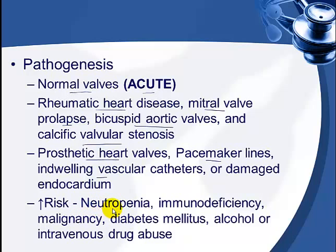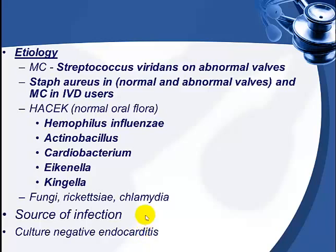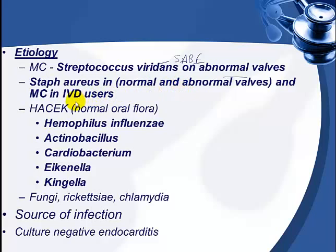Risk factors include neutropenia, immune deficiency, malignancy, diabetes mellitus, alcohol use, and intravenous drug abuse. The most common cause of infective endocarditis is Streptococcus viridans, a low-virulence organism present in normal oral flora, which damages abnormal walls and causes subacute bacterial endocarditis. Staphylococcus aureus is commonly seen in both normal and abnormal walls and is the most common organism in intravenous drug abusers.